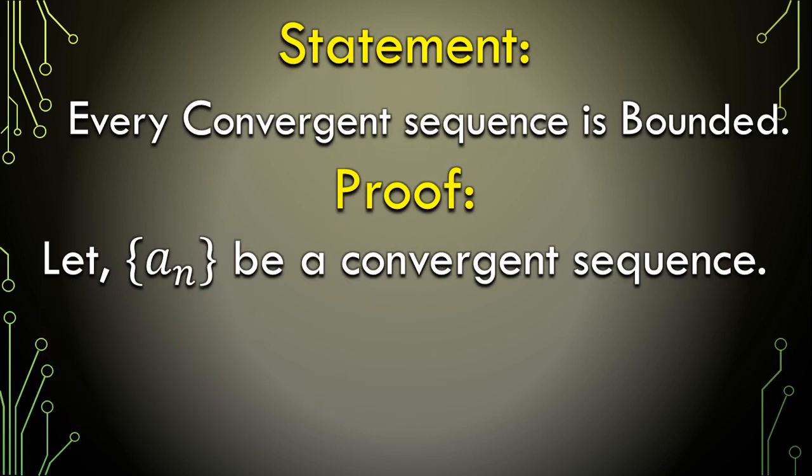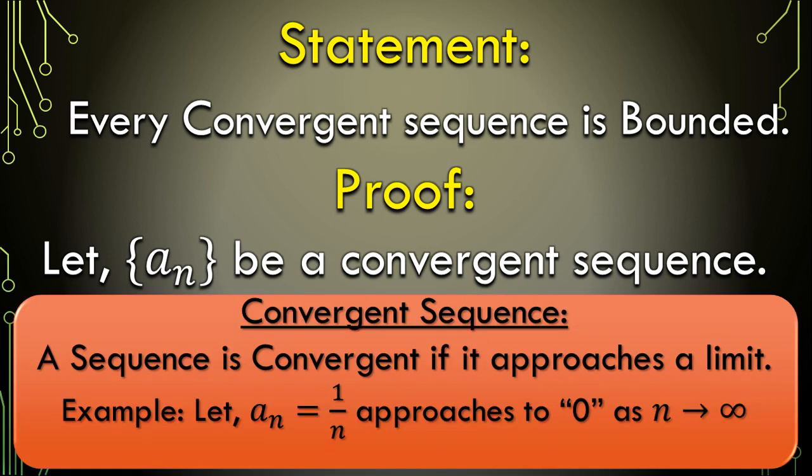So to start the proof, we are taking a random convergent sequence a_n. What is a convergent sequence? Every sequence that approaches a limit after a certain value is a convergent sequence. Like 1/n, for instance — it approaches 0 as n increases toward infinity. 1/1000 is closer to 0 than 1/100 or 1/900, so increasing n makes 1/n closer to 0. That's why 0 is its limit, and that makes 1/n a convergent sequence.